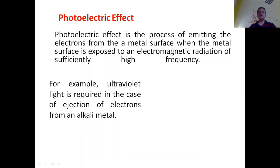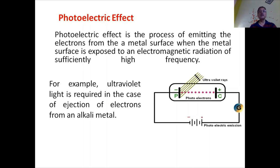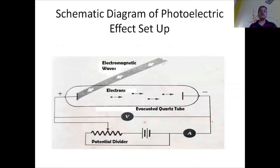For example, ultraviolet light will be required in the case of ejection of electrons from an alkali metal. This is a small setup of the photoelectric effect, and to understand the photoelectric effect experiment elaborately, let us consider this schematic diagram.